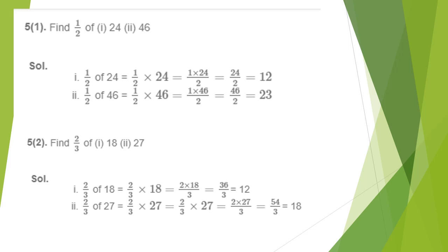Cancelling the common factor of 2 in numerator and denominator, the answer is 12. Second question: 1/2 of 46, that means 1/2 multiplied by 46. Applying the rule, multiply numerator and whole number, keeping the same denominator: 1 × 46 ÷ 2 = 46/2. Since 2 is common in numerator and denominator, cancelling gives the answer as 23.